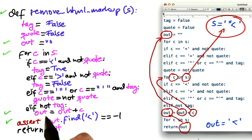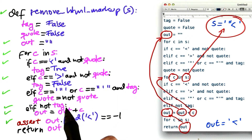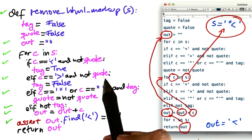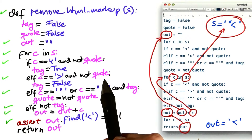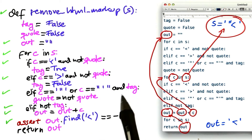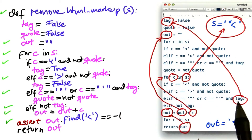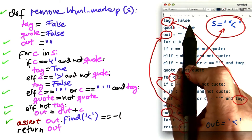Therefore, since we execute out equals out plus C, the controlling conditions are also part of the dynamic slice. From these conditions, we again get more dynamic data dependencies, which we can look up again in our dynamic trace. For instance, the tag variable, which is being read over here, was last set up here. Therefore, this condition is data dependent on this initialization.